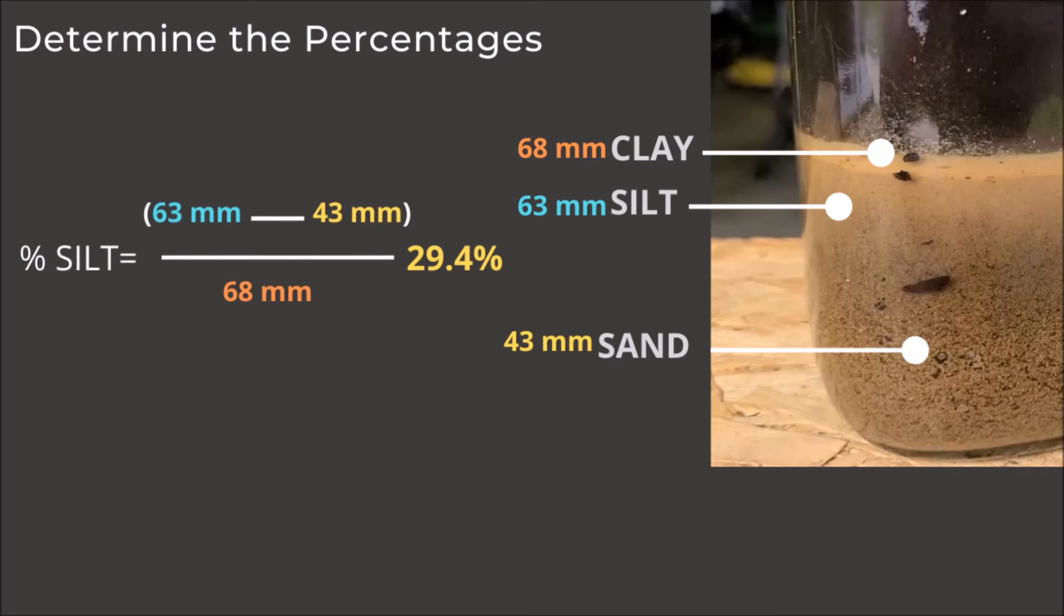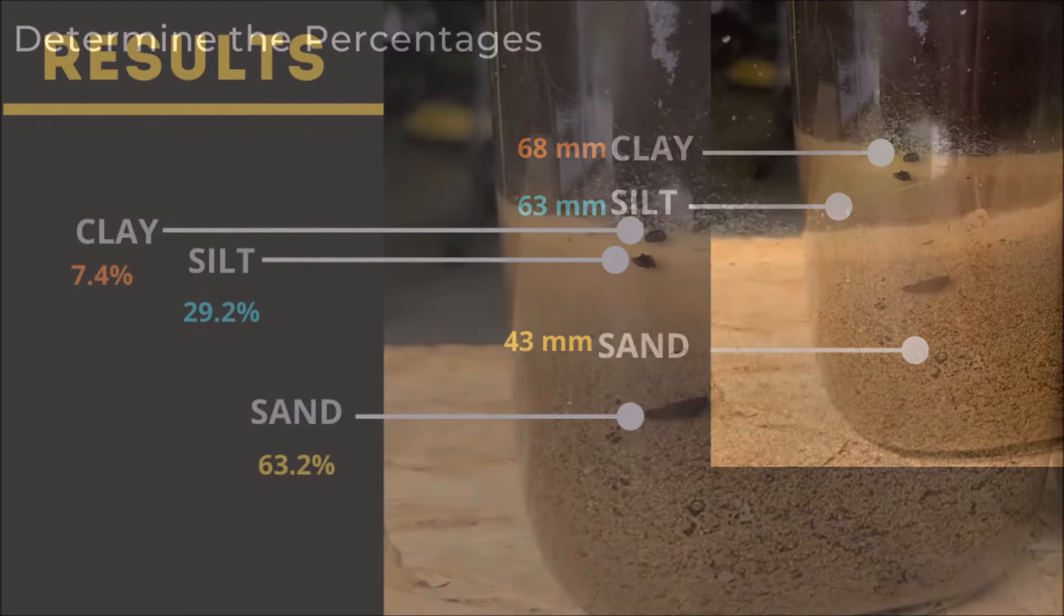Finally, to do the clay, we take the height of the clay minus the height of the silt, divided by 68 millimeters, and we get 7.4 percent.